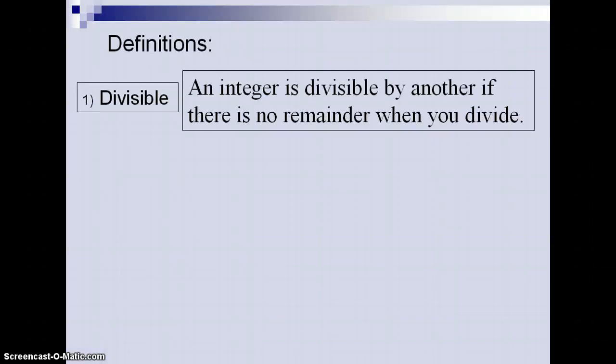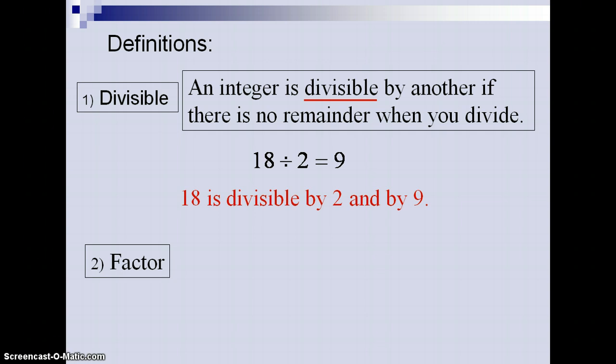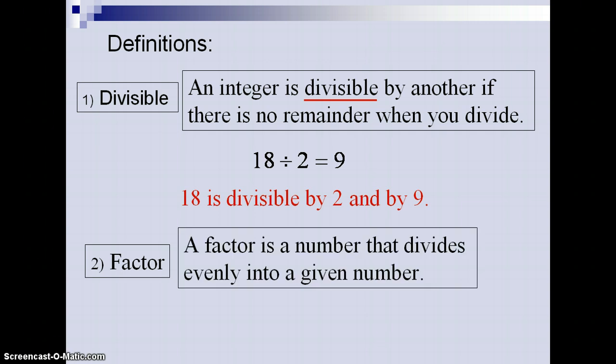Here's our definition from class. When a number is divisible, it can be divided into another number without any remainders, no fractions, no decimals. Factors are numbers that divide evenly into a given number. All the factors of 18 would be 1 and 18, 3 and 6, as well as 2 and 9.